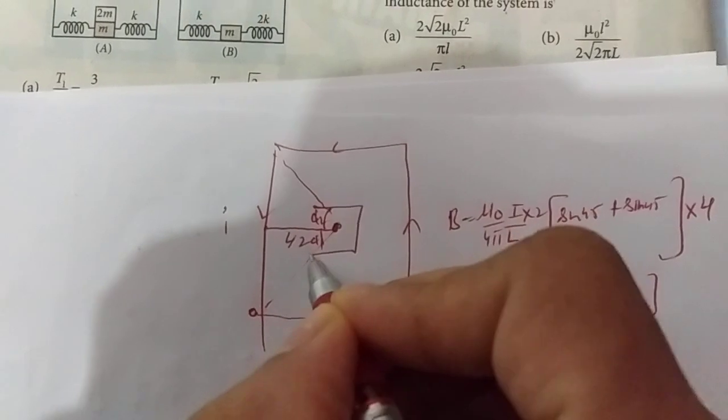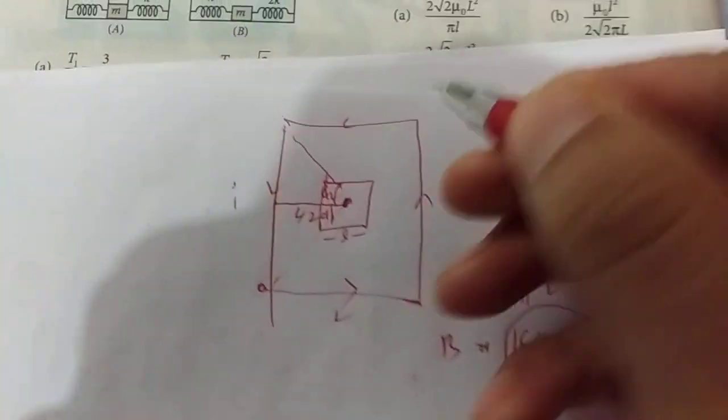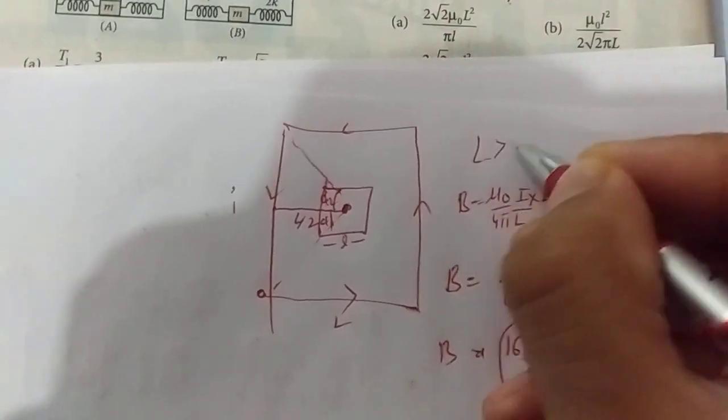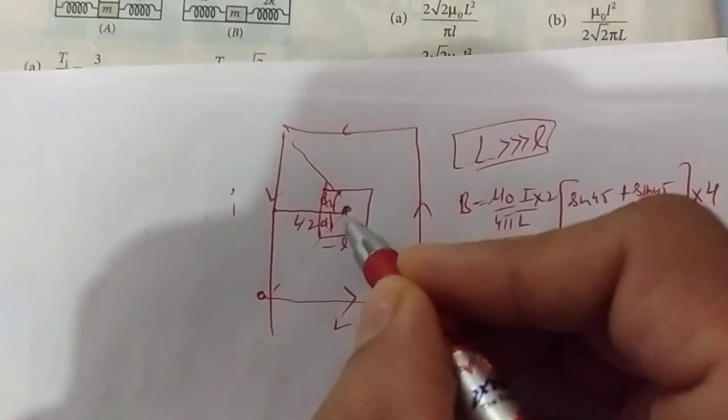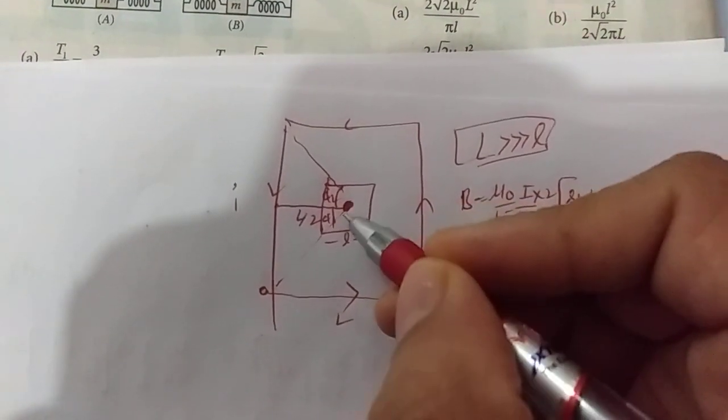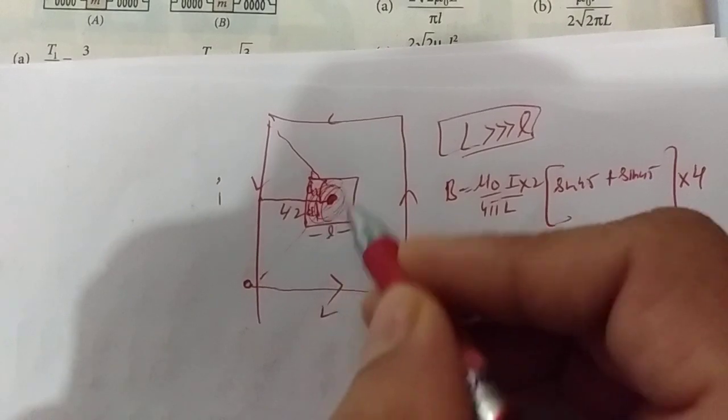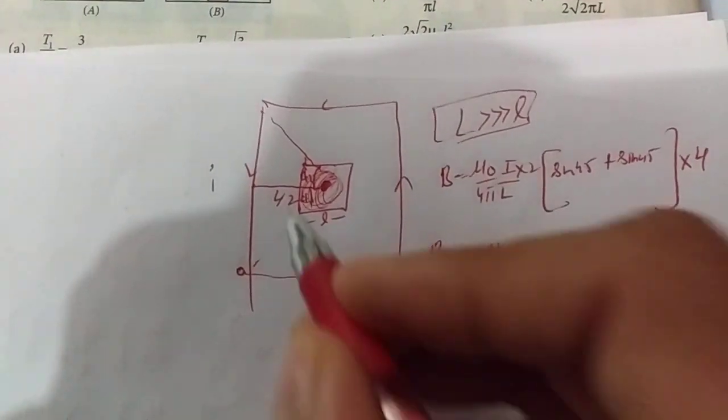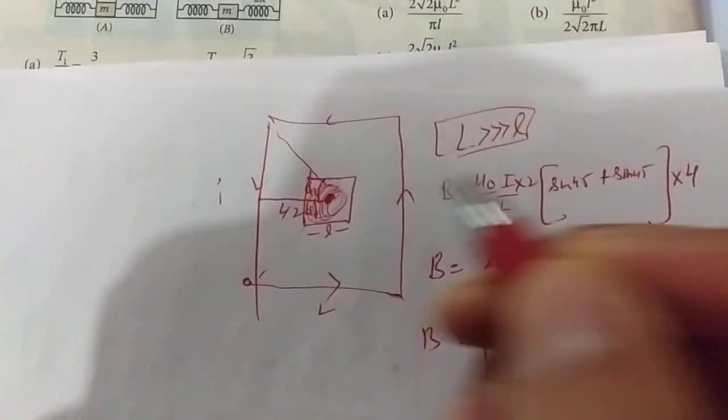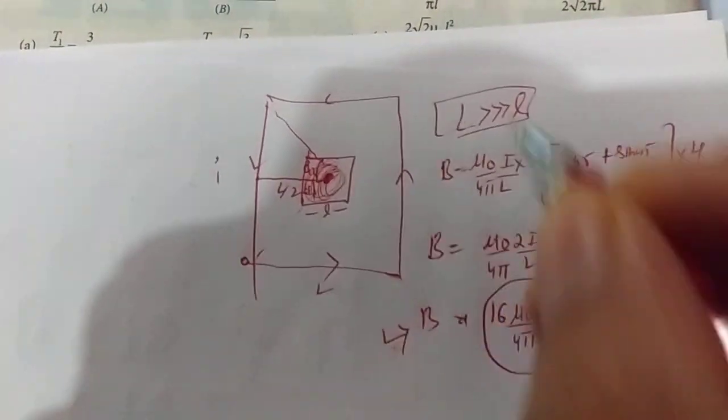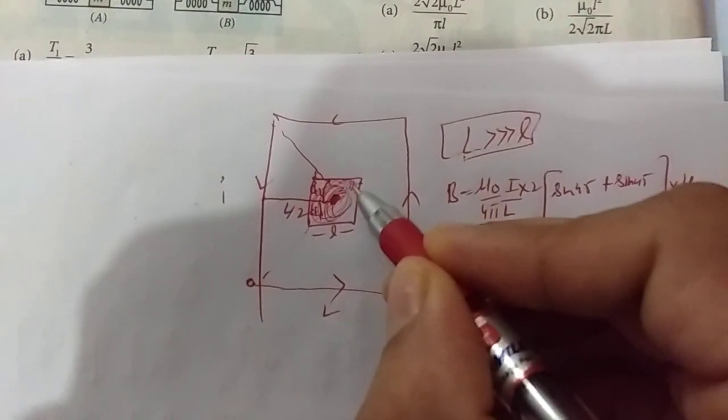Now there is another little loop here with side small l. In the question, capital L is very large compared to small l, so this is a very small loop. It means that the field we calculated at the center is almost the same throughout this small loop region. The whole region of the field you can take as capital B, because this area is very small.